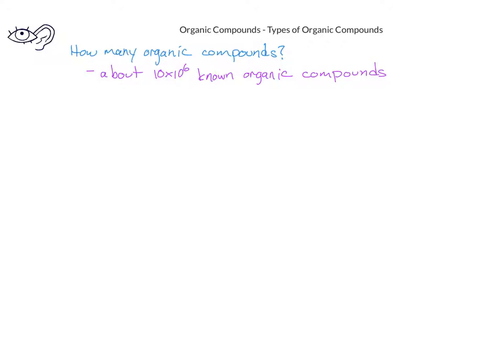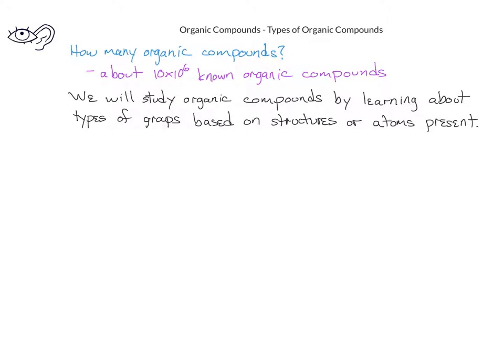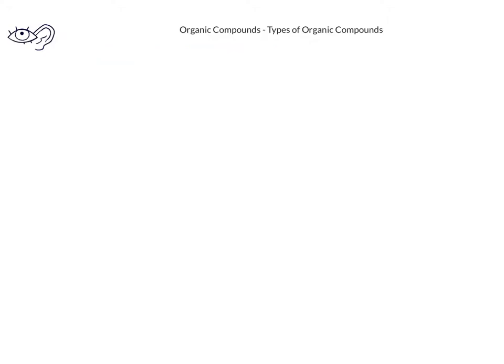They do this by dividing organic compounds into different types or classes. What we're going to do in this video is introduce some of the basic types of organic compounds that we'll be learning about this semester. We've already been introduced to one of the simplest classes of organic compounds — the compounds known as hydrocarbons, which are composed of only carbons and hydrogens.